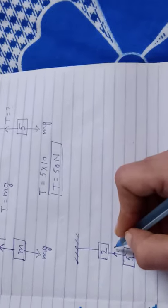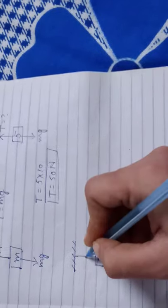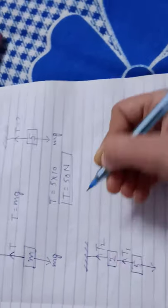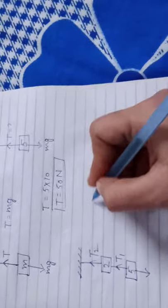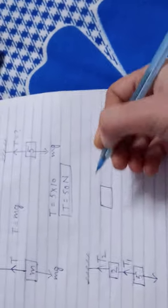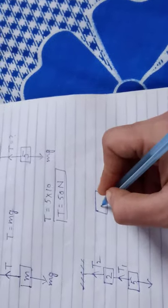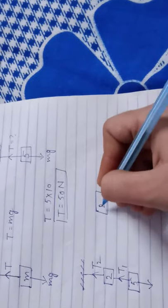What is the tension on this string and this string? So first we will draw the free body diagram of the 2 kilogram mass block.